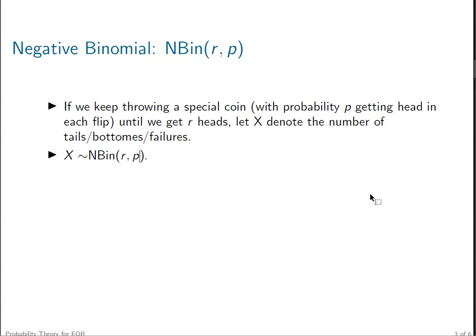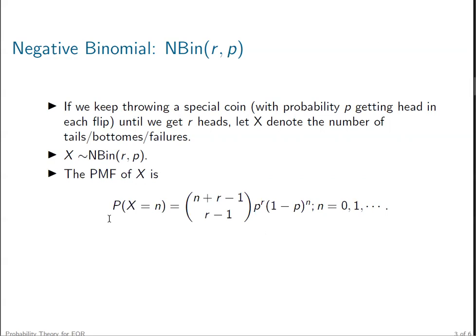You can pause the video and try to find out the PMF function of X. To specify the PMF function, we only need to specify the probability value of X equal to n, where n could be 0, 1, 2, and so on. When X equals 0, that means we immediately get r heads with no tails at all. Suppose X equals n — that means we're going to have n tails before we get a total of r heads, so in total we're going to have n plus r throws. For each such outcome, the probability is p to the power of r, because we have r heads, and (1-p) to the power of n, because we have n tails.